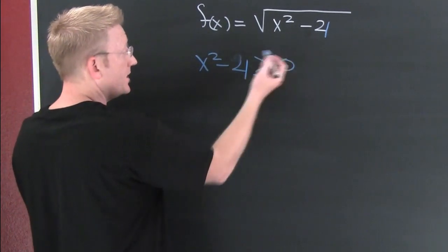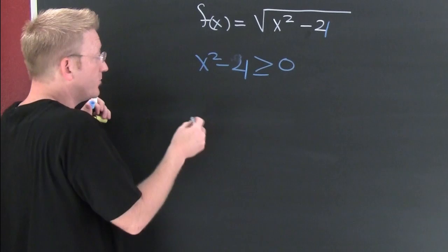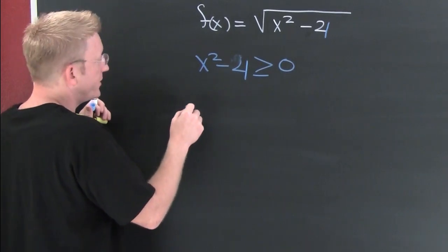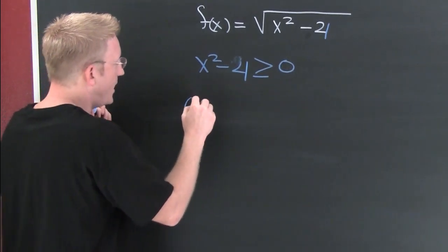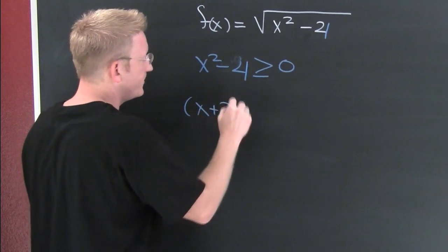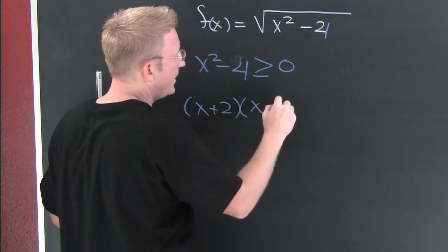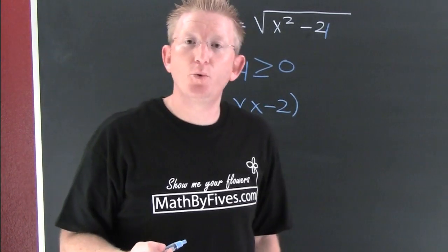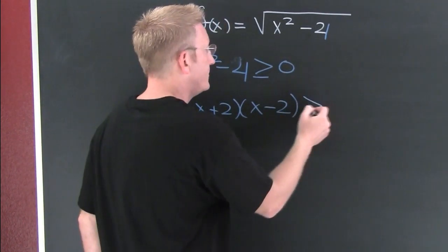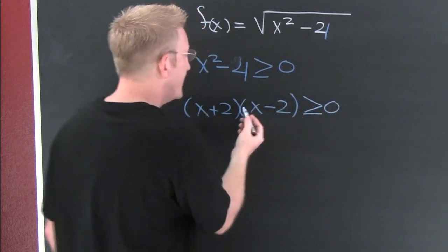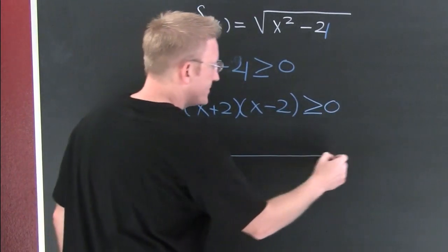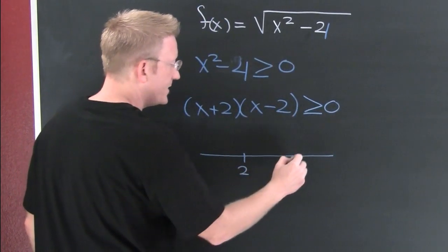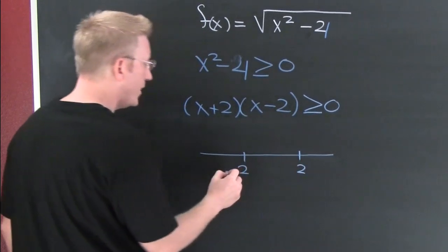Every single time, x plus 2, x minus 2. Now what do we want? We want to know where that is bigger than or equal to 0. Here I have a couple of critical points. 2 and minus 2.